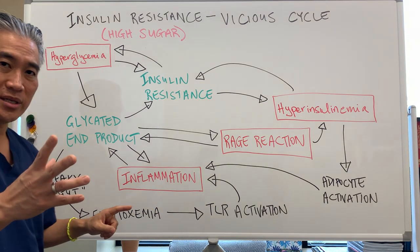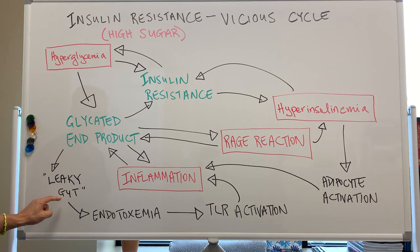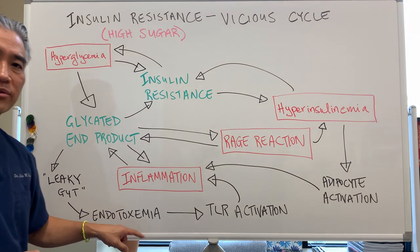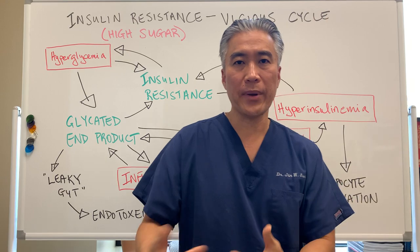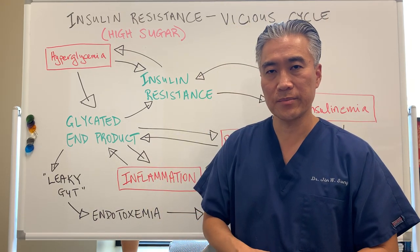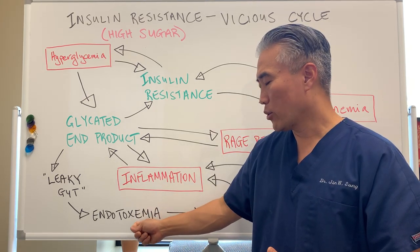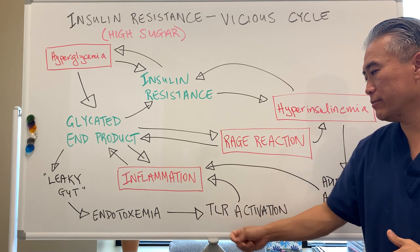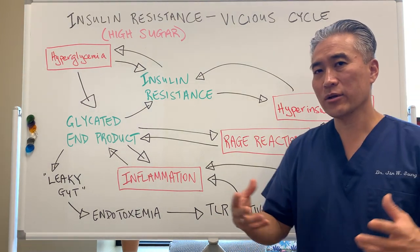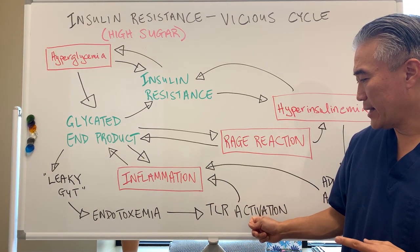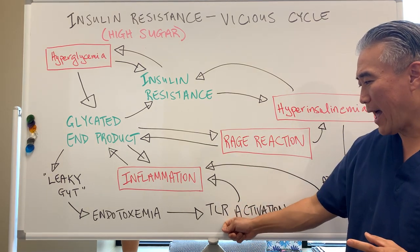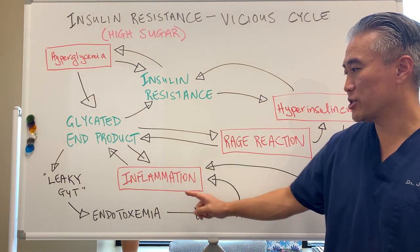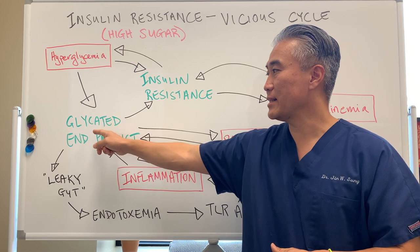Glycated end products, because they damage proteins and lipids, go into the gut and create leaky gut, or intestinal permeability. Intestinal permeability will allow endotoxins — things that should not cross the gut barrier — to start crossing into the bloodstream, like lipopolysaccharides or other toxins. Once that happens, you're going to have TLR activation — toll-like receptor activation. These are a class of proteins responsible for immune responses. So you're activating an immune response when you have endotoxemia or leaky gut, and that activation also increases inflammation, further increasing glycated end products.